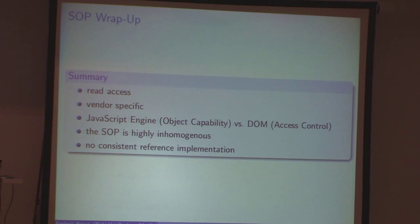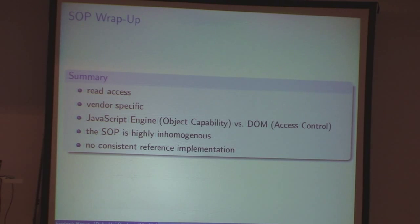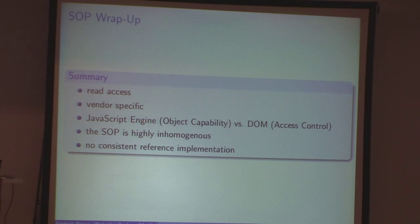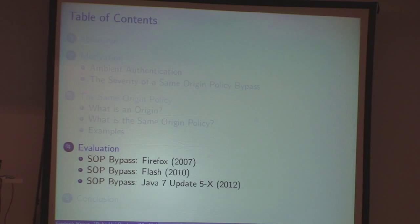To wrap up the same origin policy: it's about read access to resources from different domains, it's highly vendor-specific, and theoretically it's already a bad idea — we have an object capability world where access to every object is given, and after the fact we say that certain objects you better not access. In general it's highly inhomogeneous and there's no reference implementation. It was invented in the 1990s during the browser wars where there was no situation where people could have agreed on something like that.